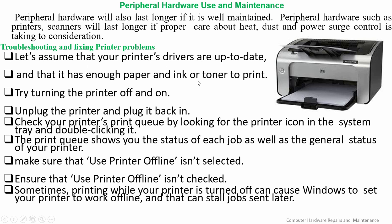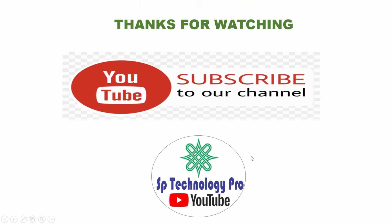For troubleshooting and fixing printer problems: make sure the printer's drivers are up to date and that it has enough paper and ink or toner. Try turning the printer off and on, unplug it and plug it back in. Check the print queue by looking for the printer icon in the system tray and double-clicking it. The print queue shows the status of each print job and the general status of your printer. Make sure 'Use Printer Offline' is not selected. Sometimes printing while the printer is turned off can cause Windows to set the printer to work offline, storing jobs to be sent later.